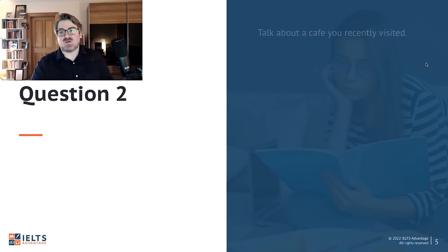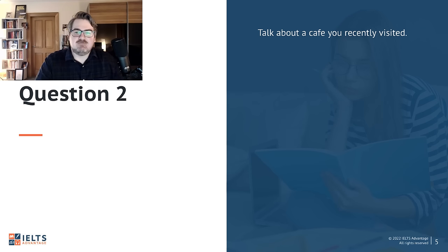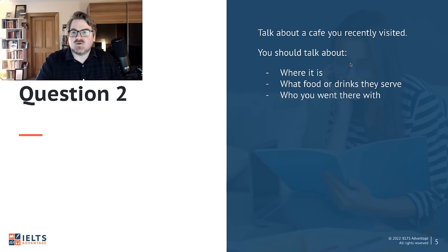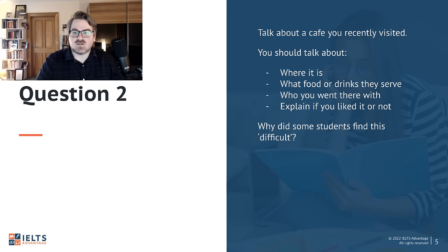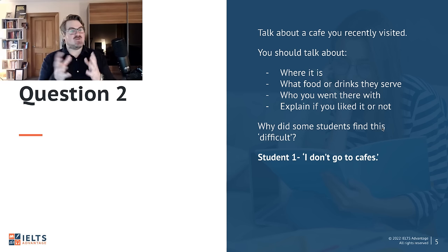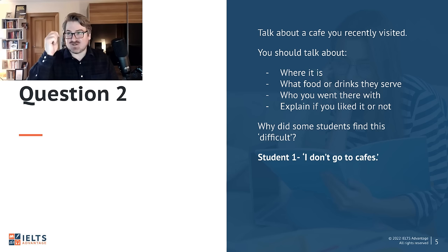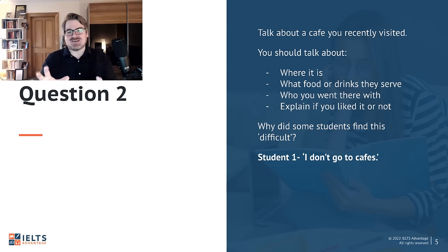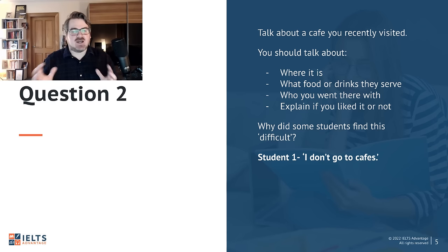The second difficult question: 'Talk about a cafe you recently visited.' The bullet points are: where it is, what food or drinks they serve, who you went there with, and explain if you liked it or not. Some students found this difficult. The first student said, 'I don't go to cafes.' This is the same negative defense mechanism we've already discussed — no matter what the topic is, they say they don't know anything about it.